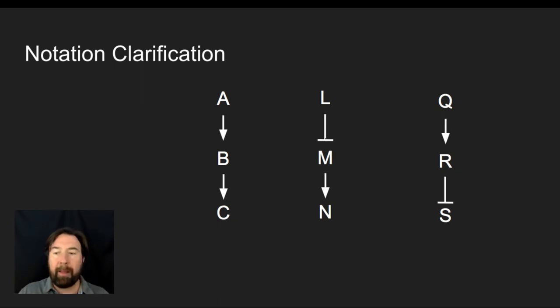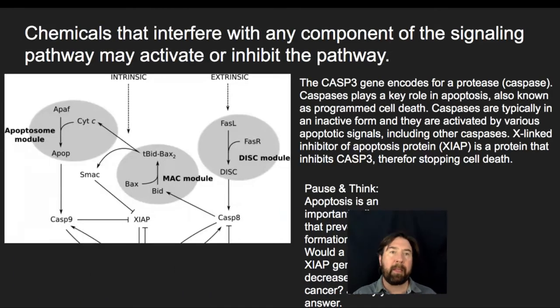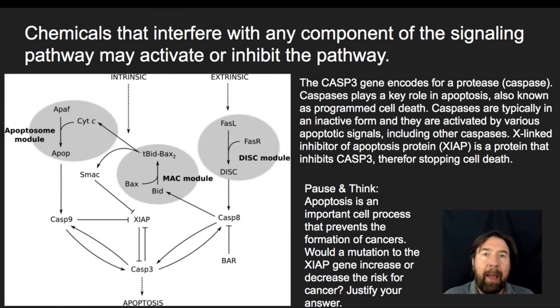These arrows versus these upside down T's or block signals are really important. Now let's look at a specific example of this. What I have here is a chemical pathway that interferes with any component of the signaling pathway may activate or inhibit the pathway. I showed you this in the previous example. I have a really complicated apoptosis signal, and I'm going to highlight some specific things. Typically in an AP question, you're going to have a lot of information thrown at you. You're going to have to do some filtering to figure out what's important, what's not.